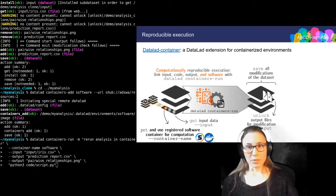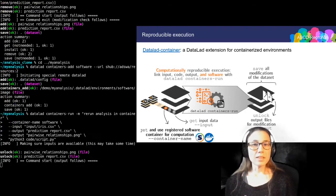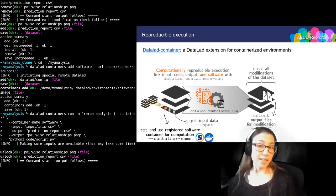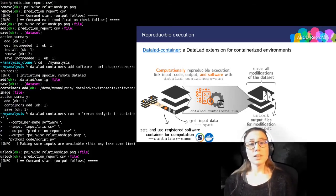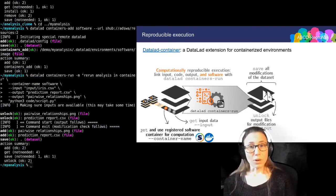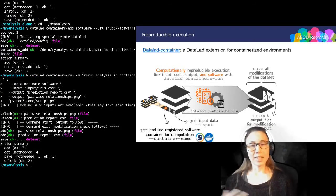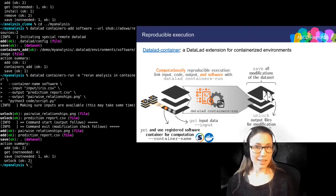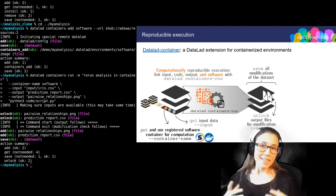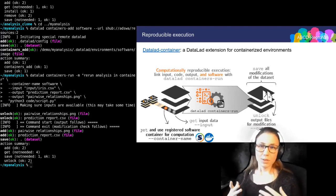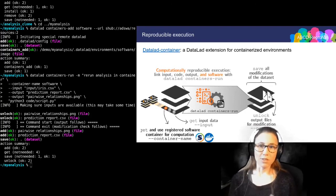So when I execute this command now, the command is executed just as before, but inside of the container. And the container is included as additional provenance into my run record. And because everything is now version-controlled and tracked, I can precisely identify any differences that occur between reruns.